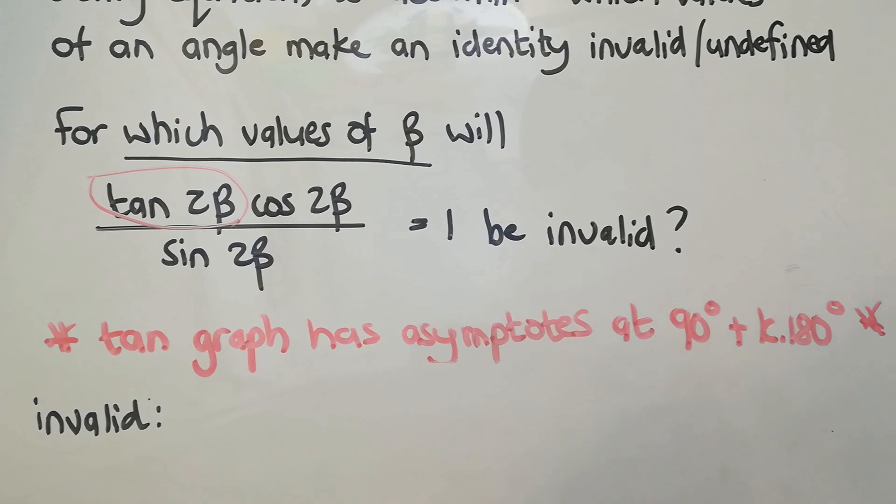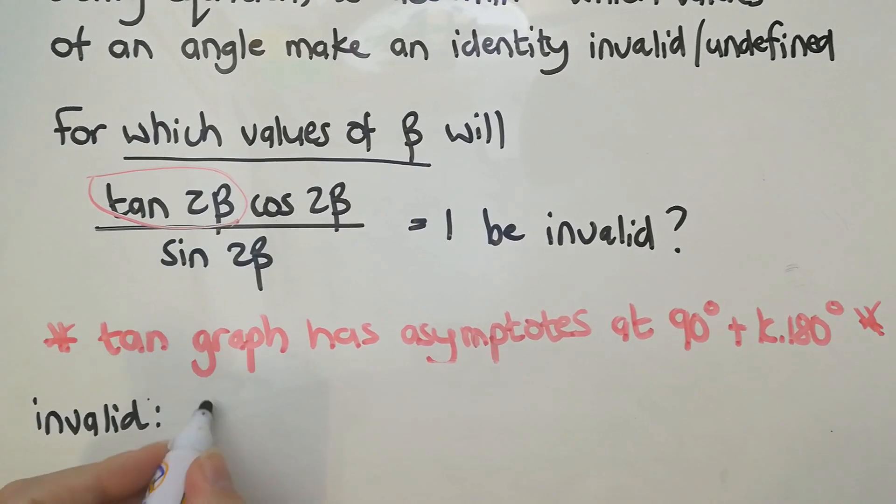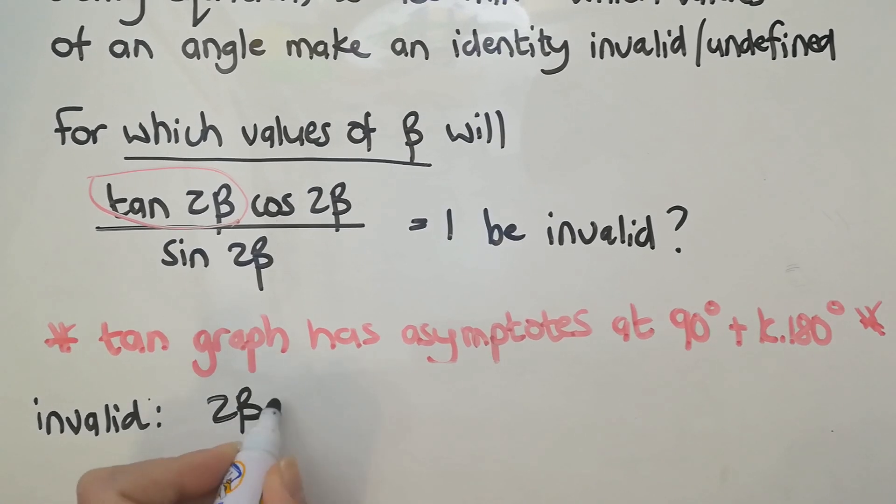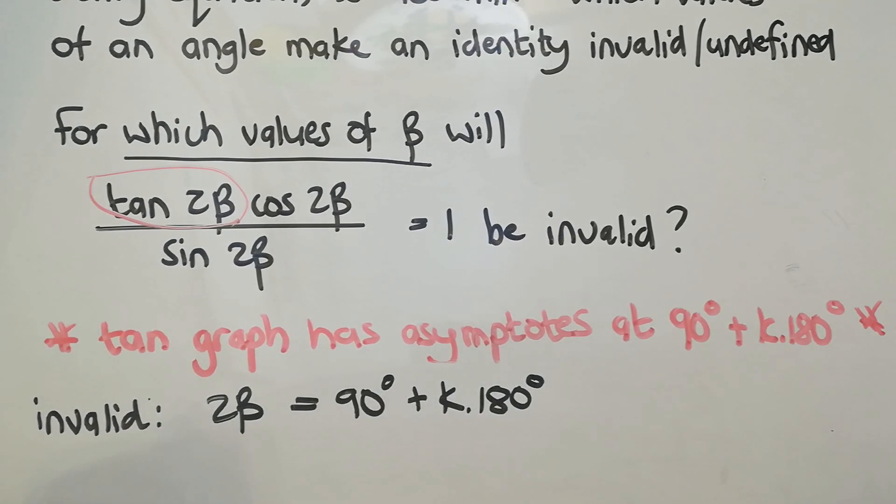So what we know, it's going to be invalid if that 2β is 90 degrees. So I'm setting up an equation, I'm saying, well, here is where it's invalid. It's where 2β is 90 degrees or every time it repeats.